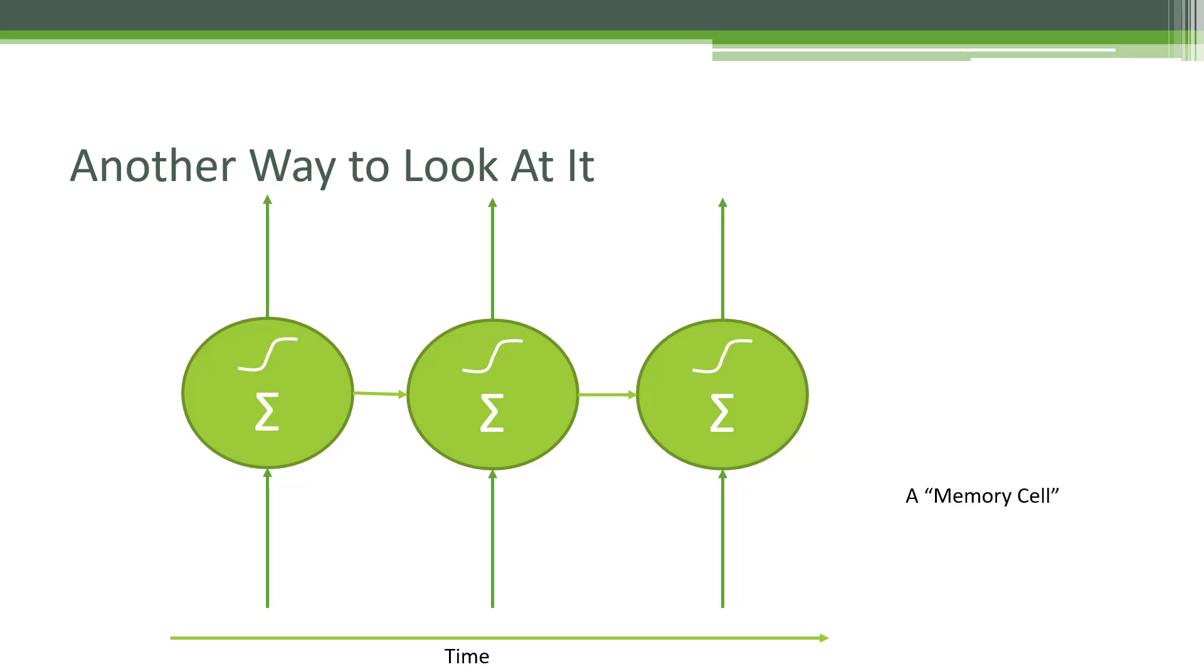So if we consider this to be time step zero, you can see there's some sort of data input coming into this recurrent neuron, and that will produce some sort of output after going through its activation function, and that output also gets fed into the next time step.